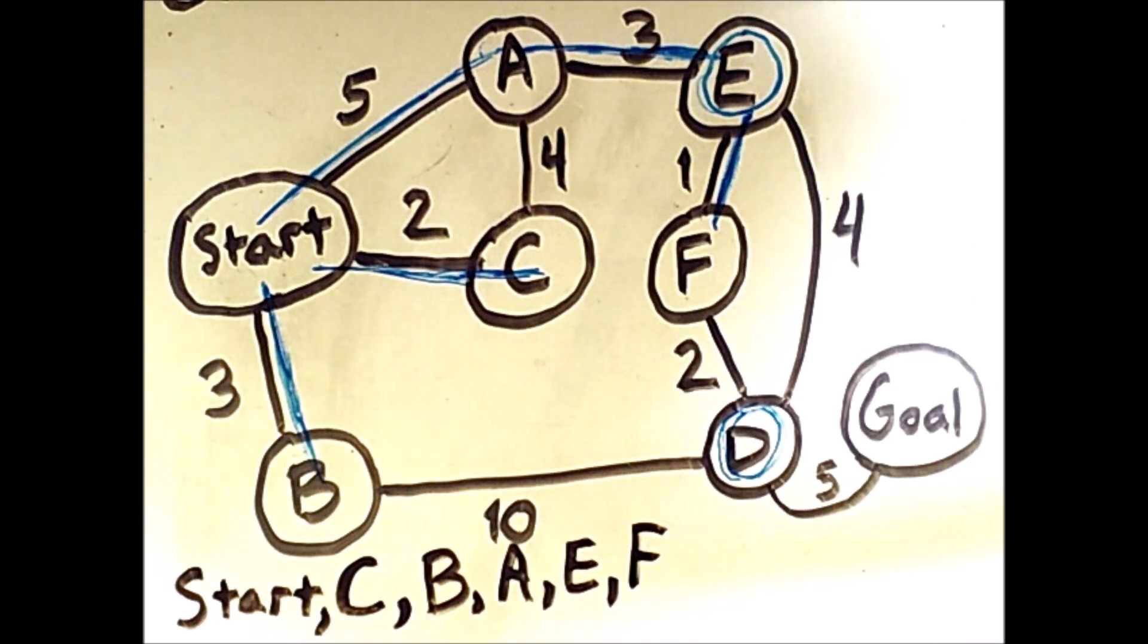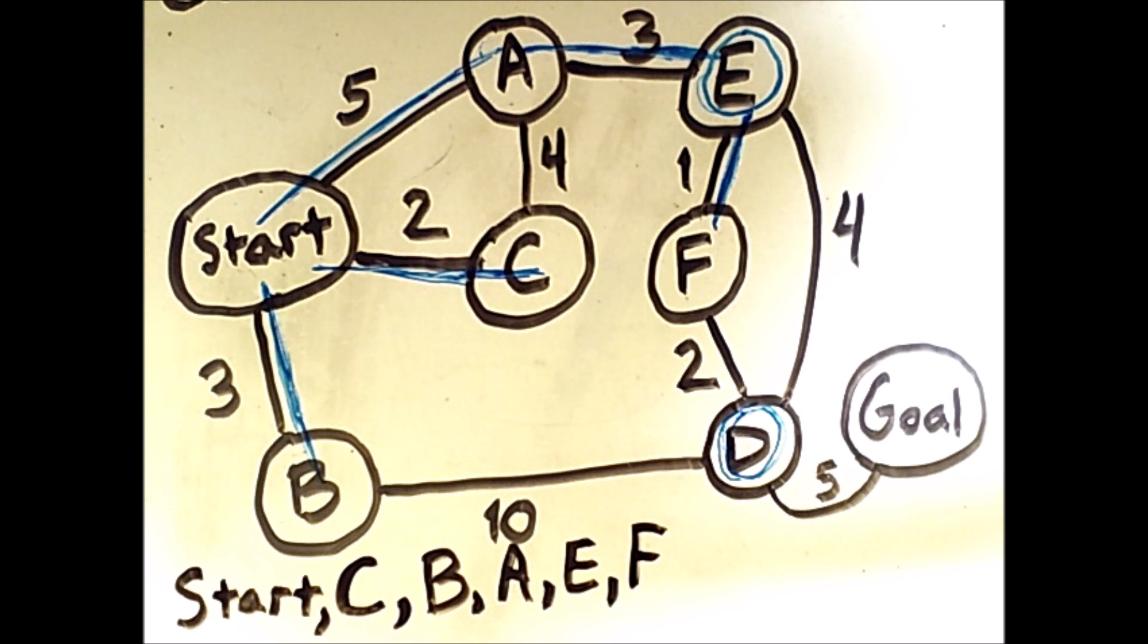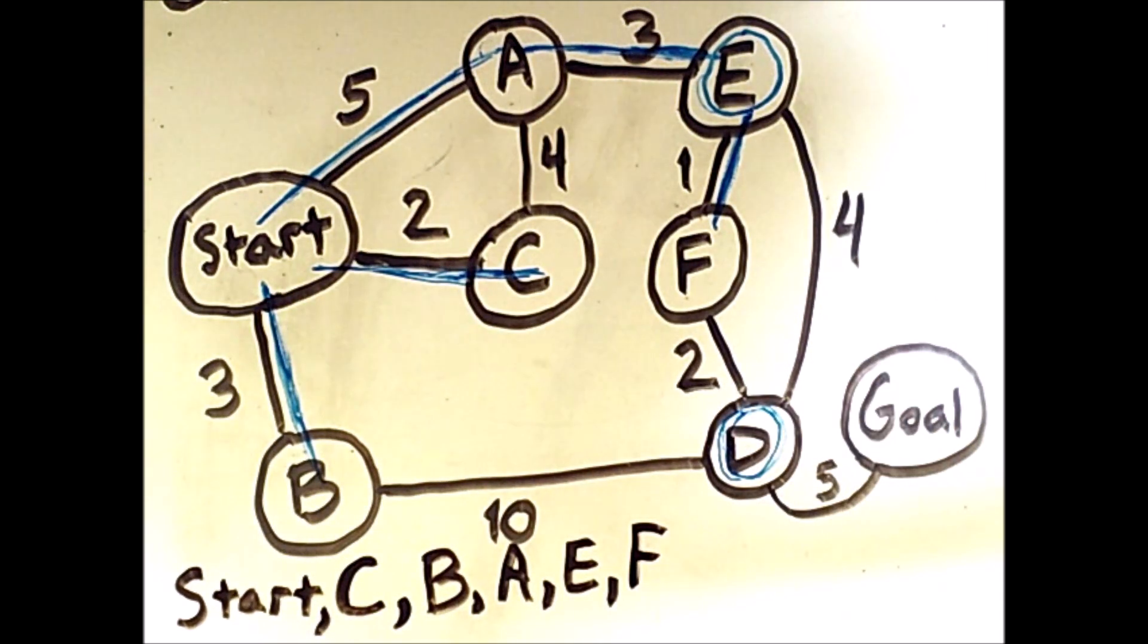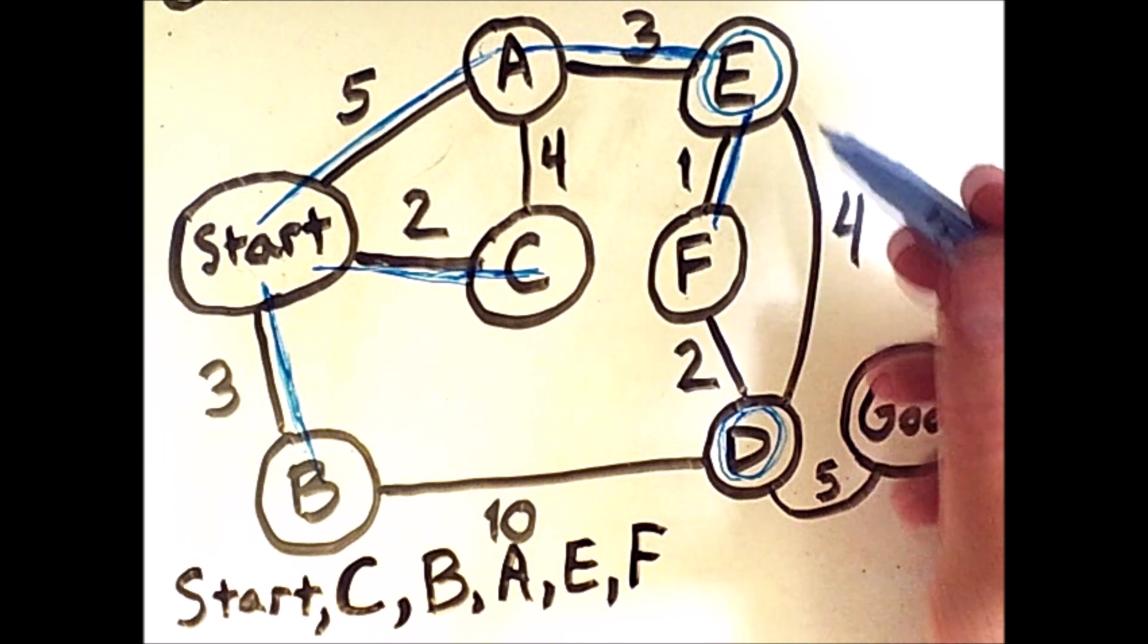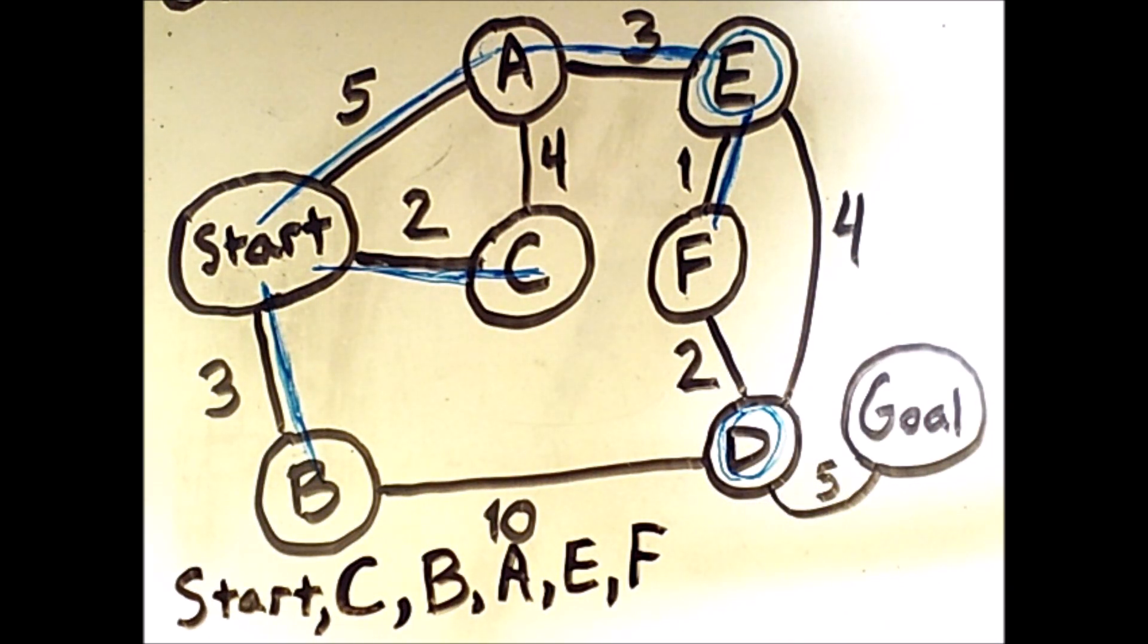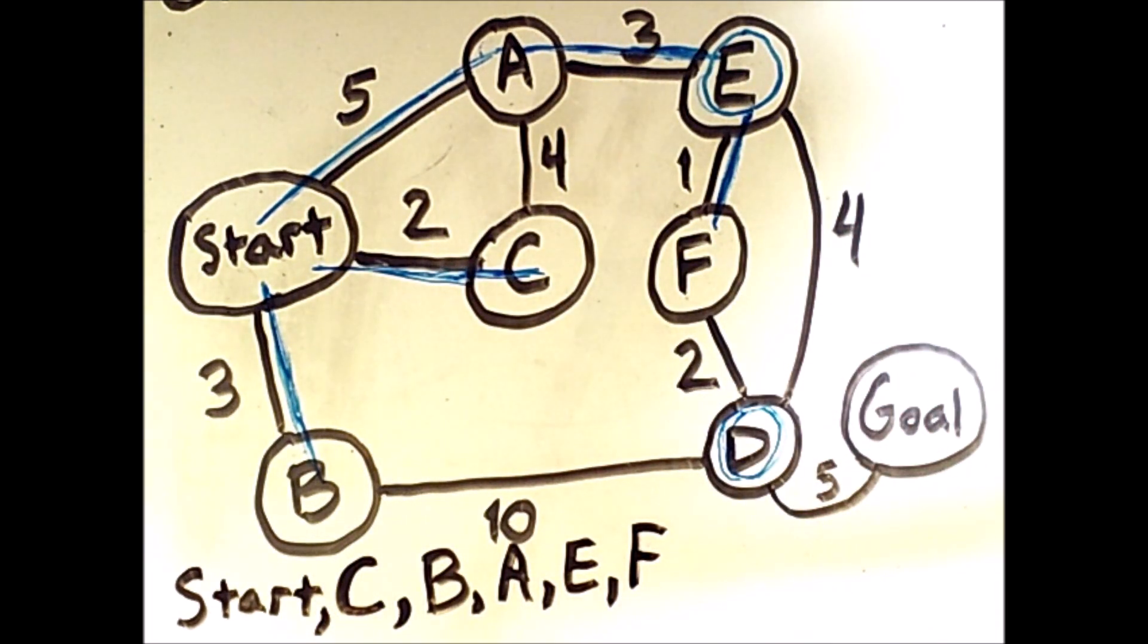But we have three options for how to get there. One is to go through B for a cost of 13. One is to go through A and E for a cost of 12. And the final option is to go A, E, F, D for a cost of 5, 6, 7, 8, 9, 10, 11. That is indeed the cheapest.